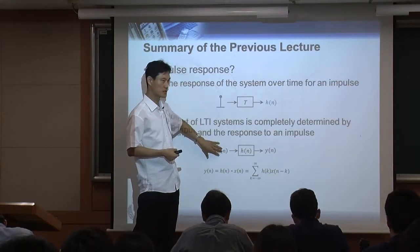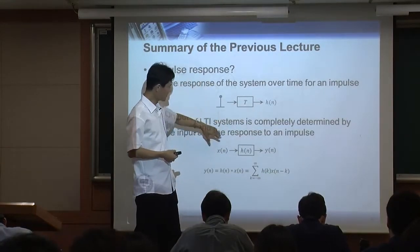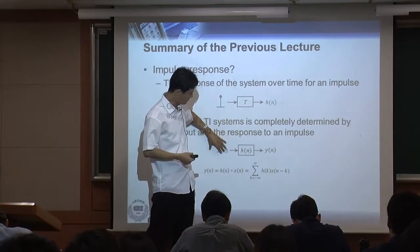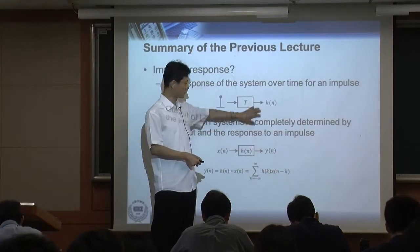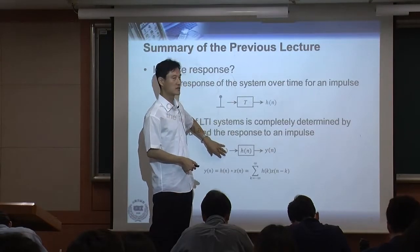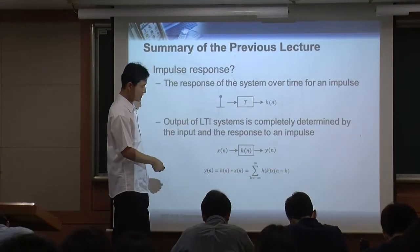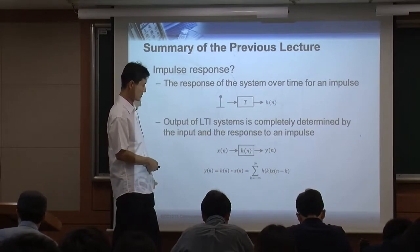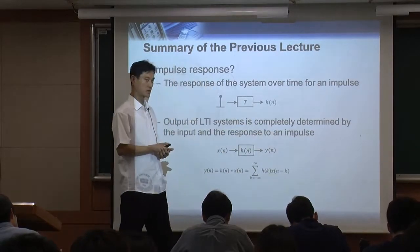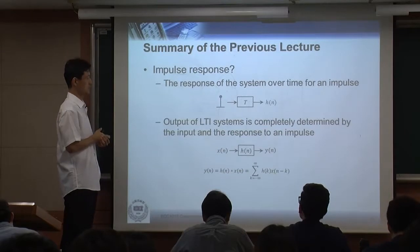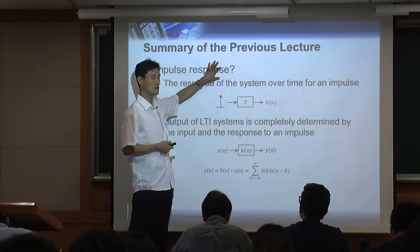After you know the impulse response, you can put your own input signal into the same block. Based on this theory, the output is going to be the convolution of the input signal and the impulse response. Since you already know both, you can calculate the output using discrete time convolution. That's why it's very important to know the impulse response.